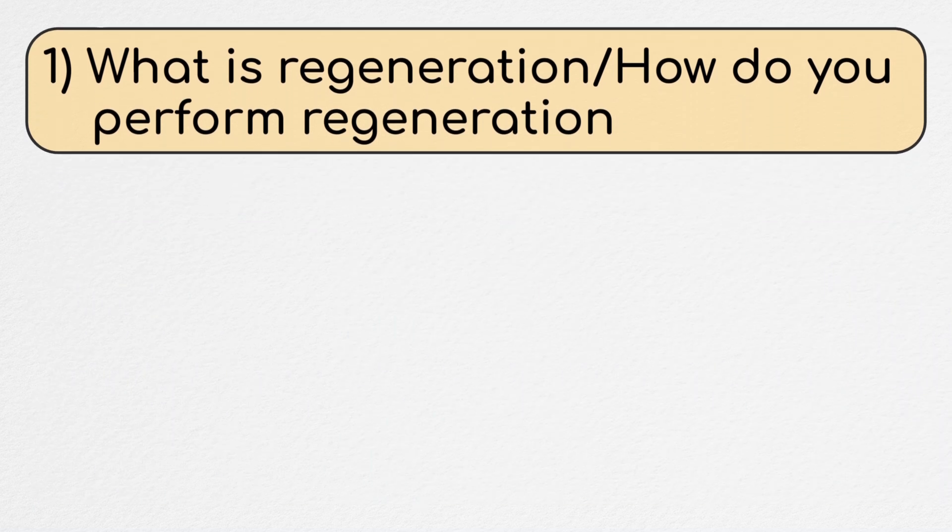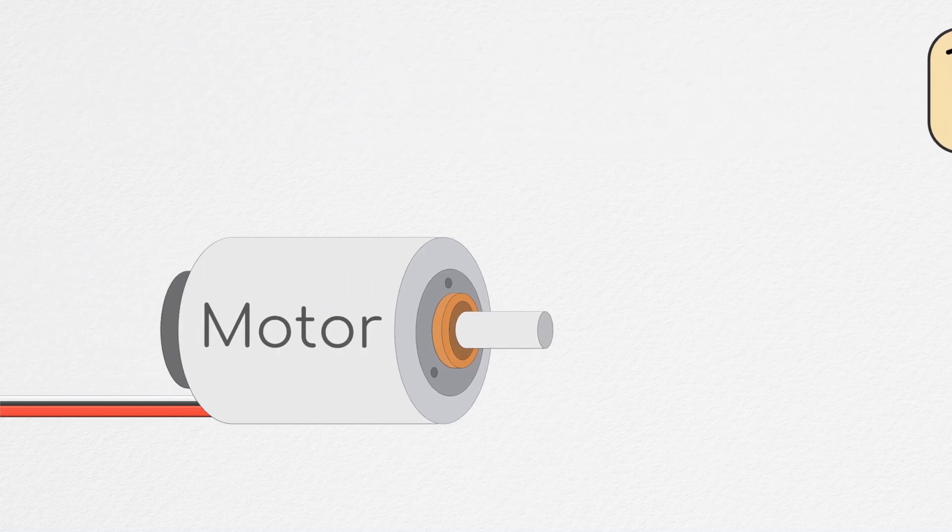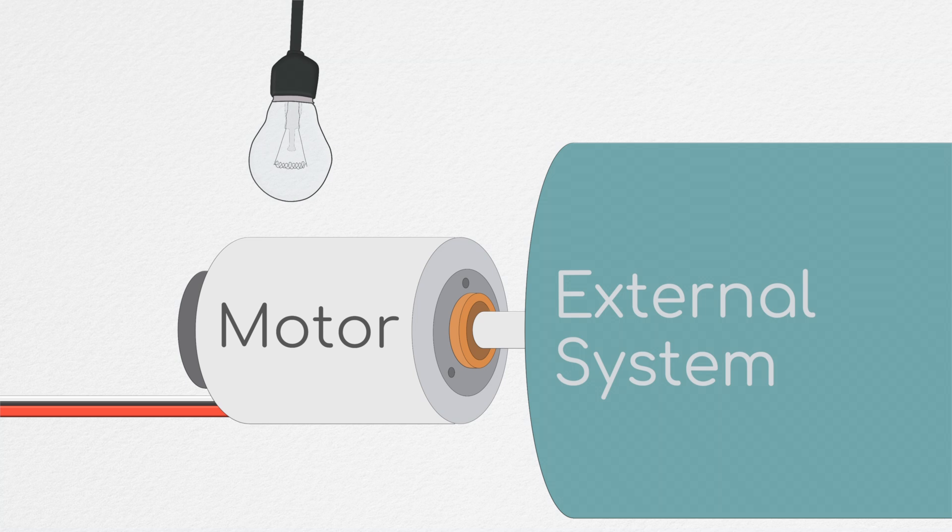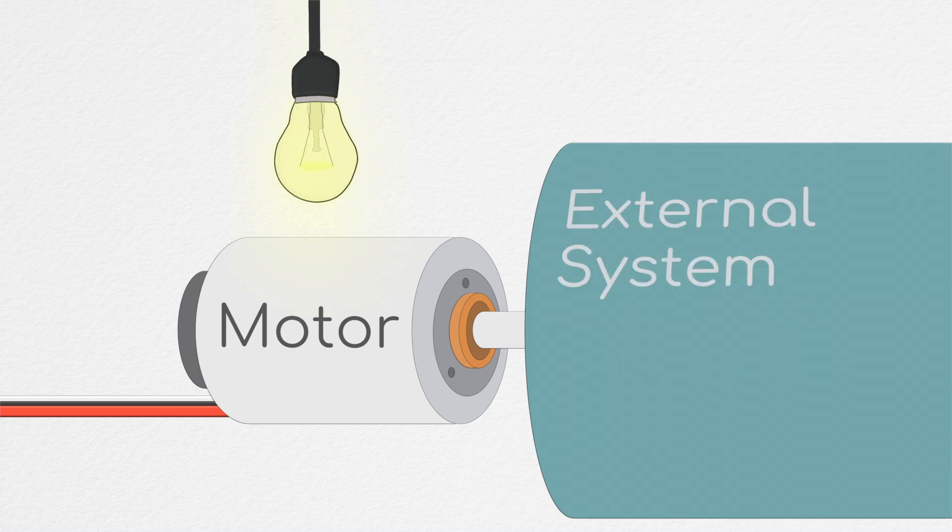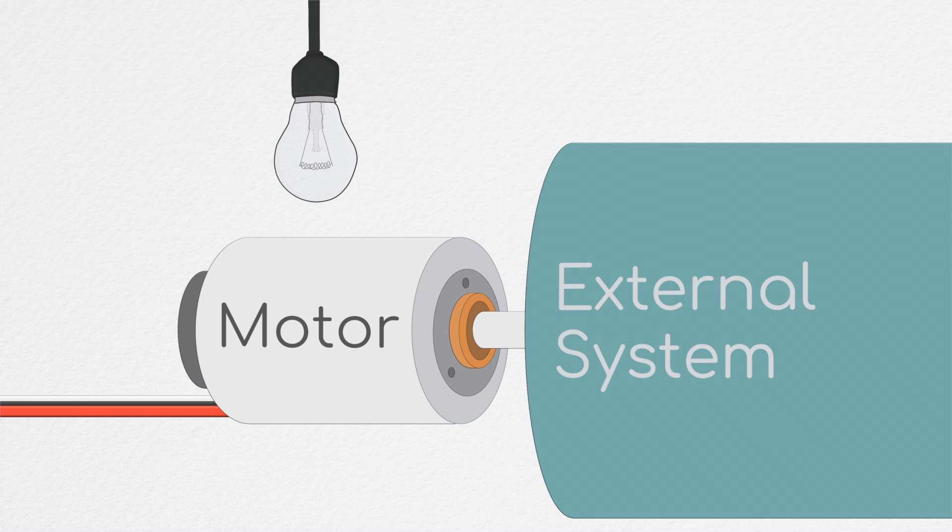So, let's start our discussion of regeneration with the basics, what it is, and how it works. As you likely know, the key idea of generation is that we're using a motor to convert kinetic energy into electrical energy. It could be argued that regeneration is any instance where current, and thus electrical power, flows back into the supply.